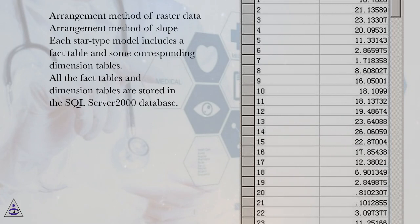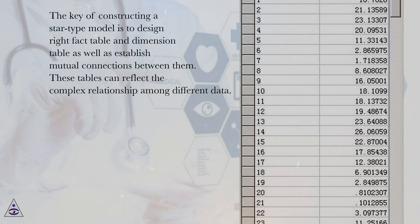Arrangement method of slope. Each star type model includes a fact table and some corresponding dimension tables. All the fact tables and dimension tables are stored in the SQL Server 2000 database. The key of constructing a star type model is to design the right fact table and dimension table as well as establish mutual connections between them. These tables can reflect the complex relationship among different data.